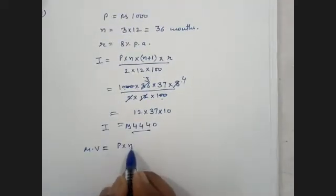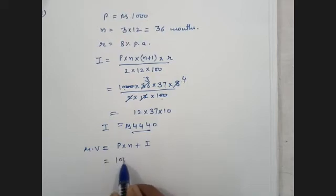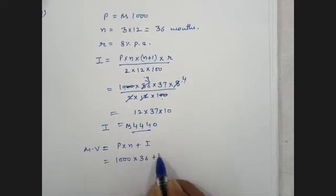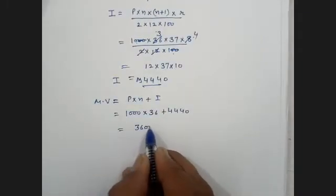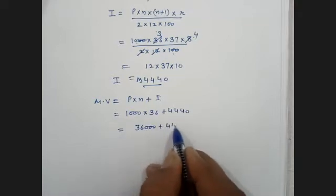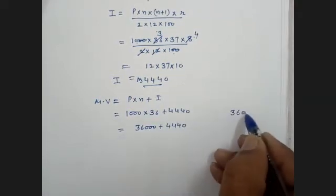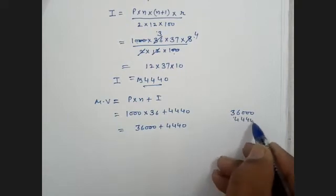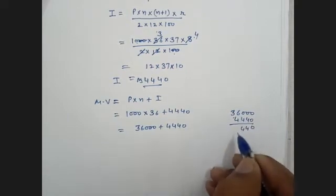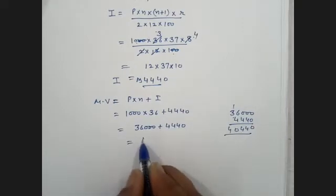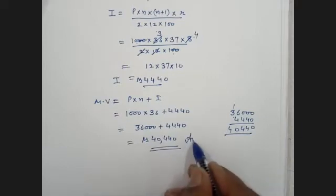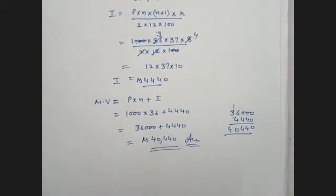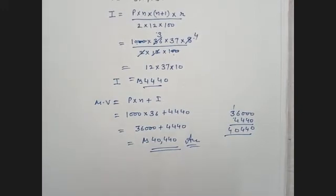Now the maturity value = P into N + Interest = 1000 into 36 + 444 = 36,000 + 444 = ₹36,444. That is the answer.